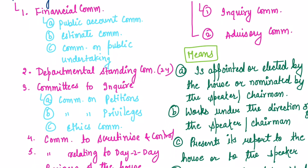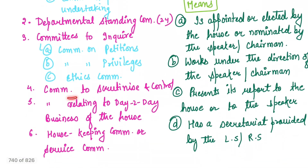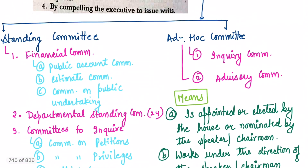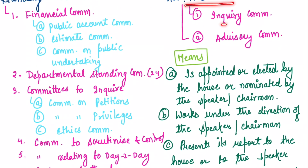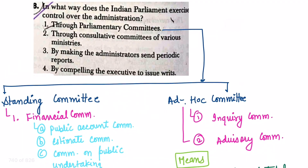The second type is the Departmental Standing Committees, totalling 24. Then there are committees to inquire, such as the Committee on Petitions, Committee on Privileges, and Ethics Committee. There are also committees to scrutinize and control, committees relating to day-to-day business of the house, and housekeeping and service committees. Ad hoc committees can be of two types: inquiry committees and advisory committees. These are elected by the house or nominated by the Speaker or Chairman, and present their reports to the house. Parliamentary committees are the key mechanism through which the Indian Parliament exercises control over administration.